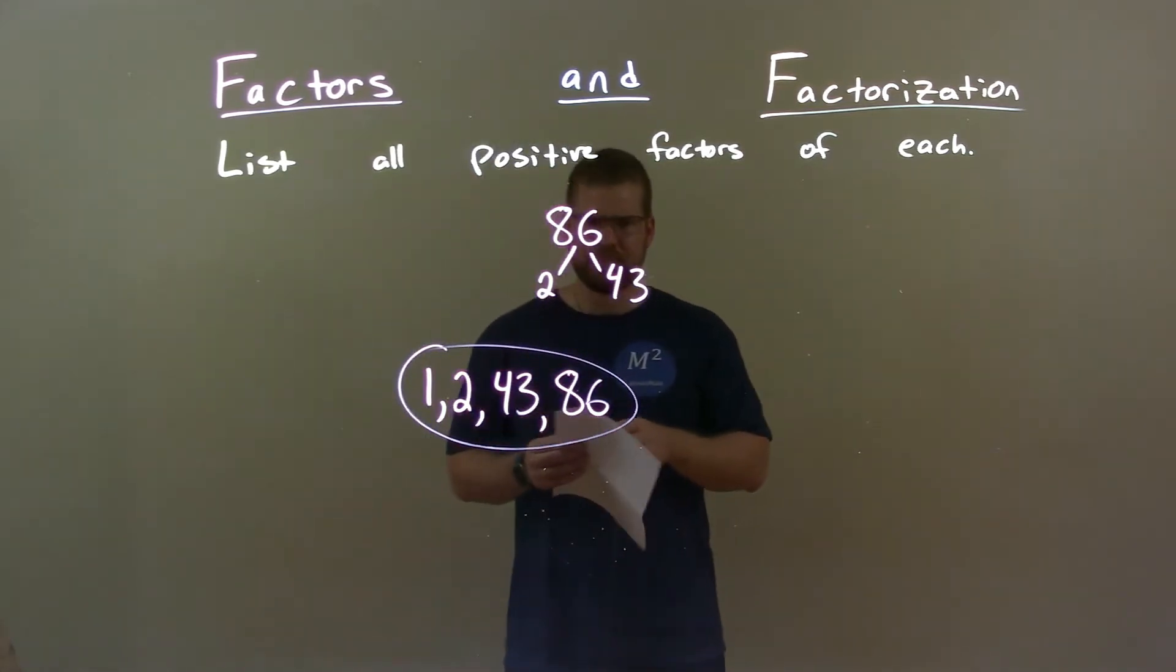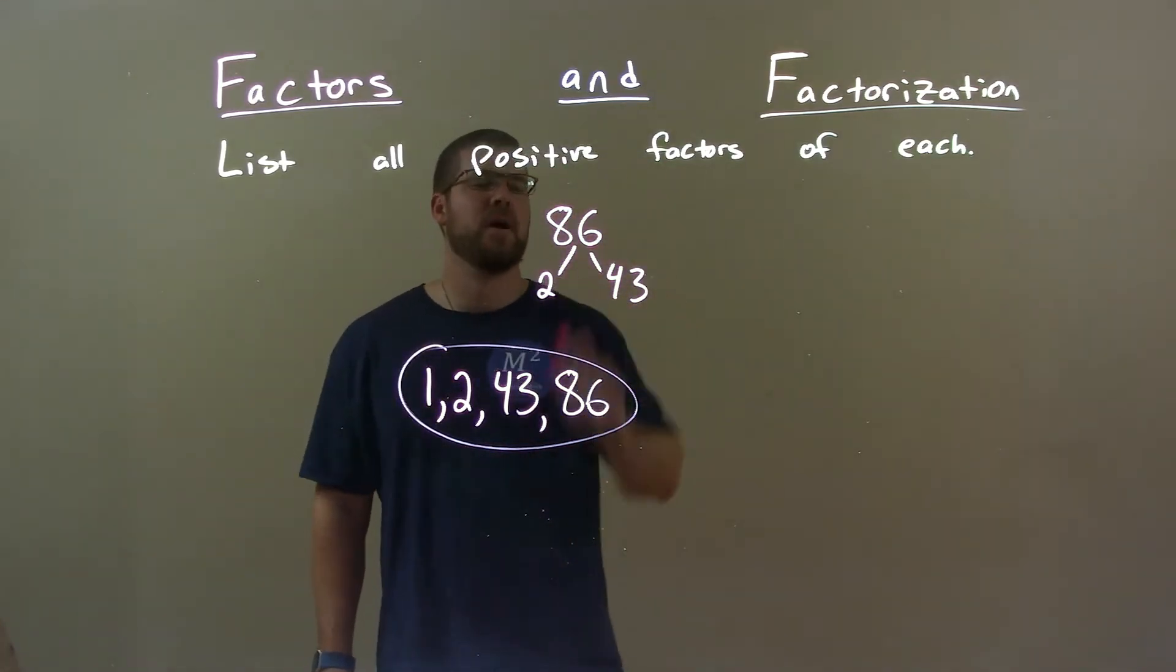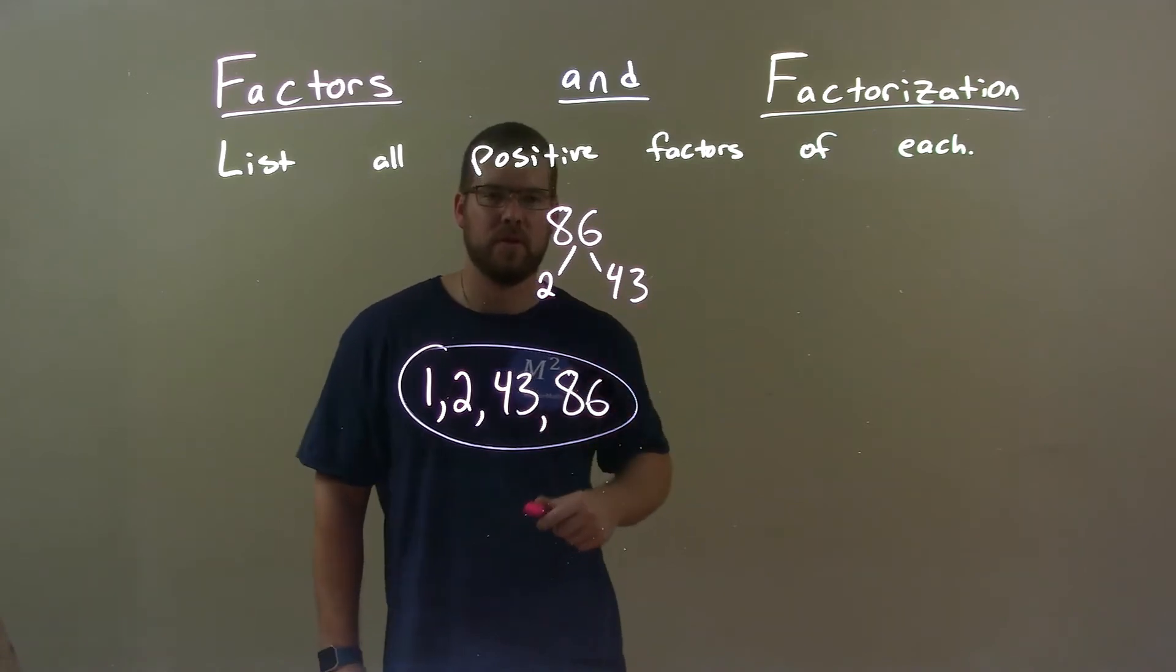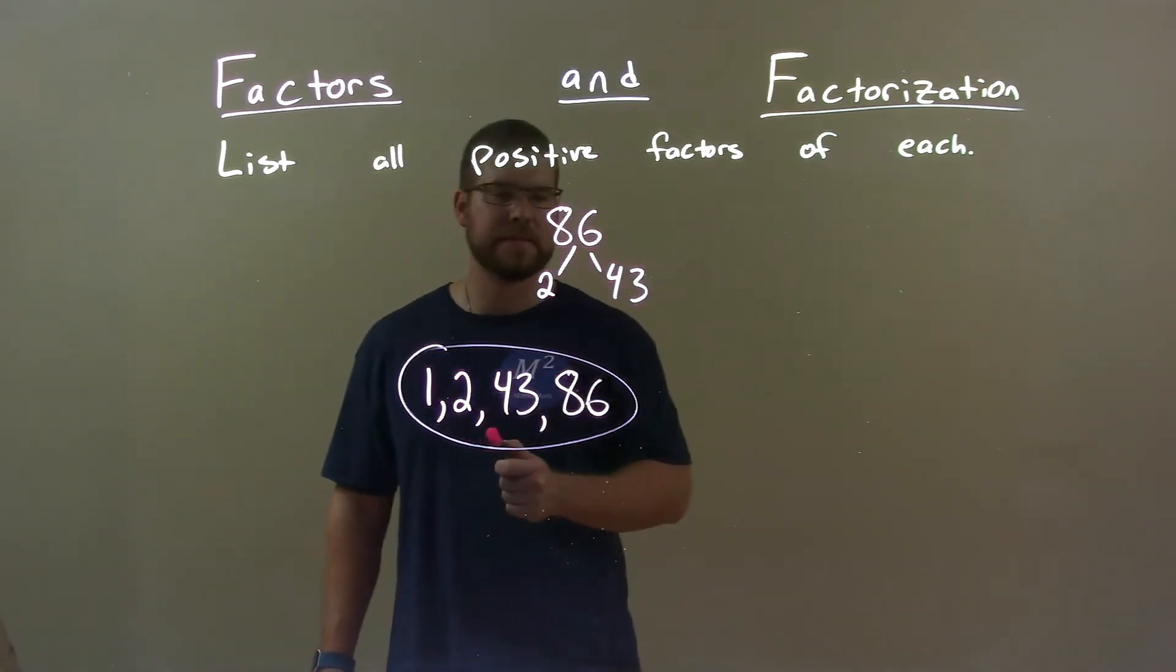So quick recap. We're given the number 86 and we define all the positive factors. Prime factorization broke this down to be 2 and 43. When I only have two numbers for my prime factorization, my list is going to be four numbers long.